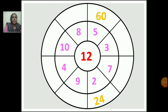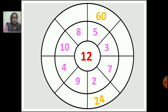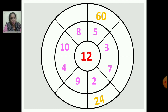In the inner circle the number is 12. You have to multiply the inner circle number with each number in the middle circle and write the answer in the outer circle. I have done two examples for you. For example, 12 multiplied by 5 is 60, so you write 60 in the outer circle. And 12 multiplied by 2 is 24. In this way you have to multiply all the other numbers with 12 and write the answers in the outer circle.